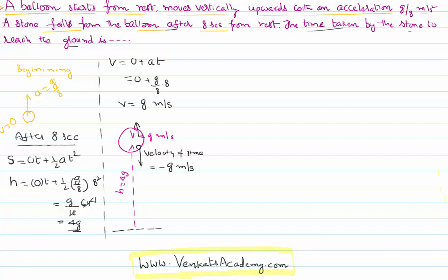Now I would like to write the equation of motion for the stone alone. Let's forget about the balloon. The balloon is now not part of our problem. Let's talk about the stone. The stone is at height h = 4g, coming down.